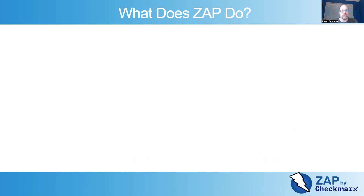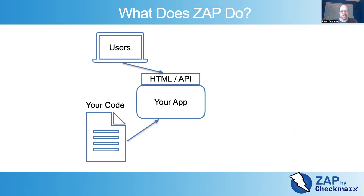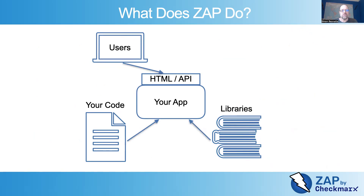So what does Zap do? This is your application and this is your application running. So it's a web application, has an HTML and/or API interface, and that's what your users interact with via HTML or an API. But your application doesn't exist in isolation — it is created by code, which is compiled to create your application. And it's based on a set of libraries that you've included, which are also built in when the application is compiled.